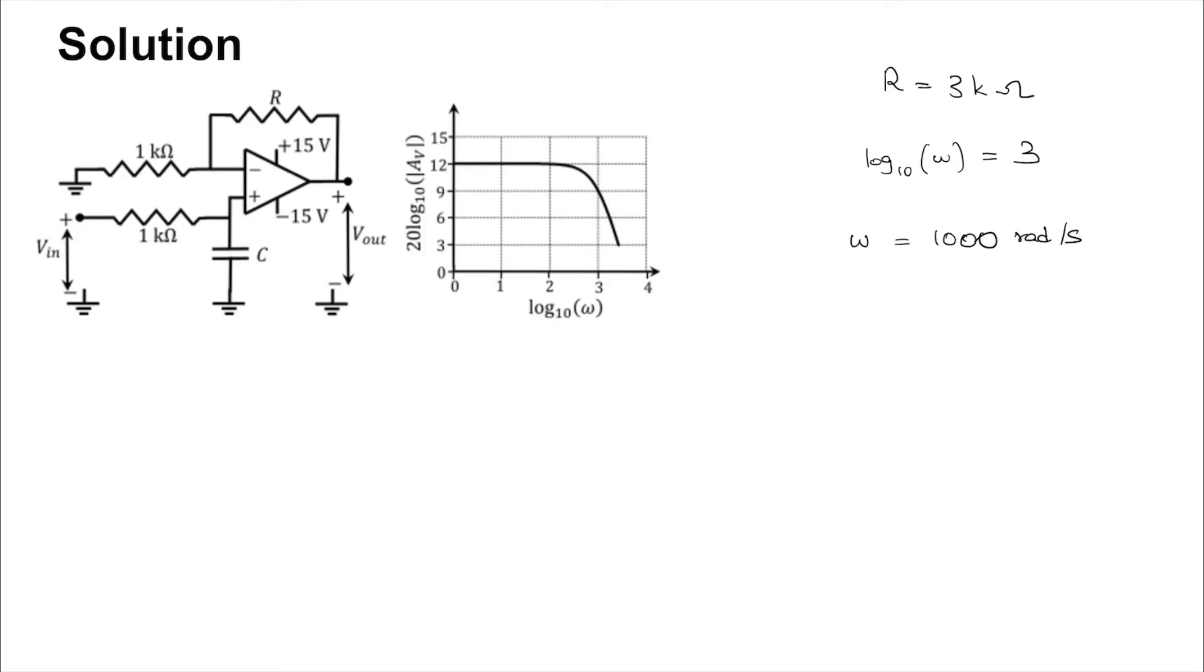And since this is a low pass filter, what we can say is that the cutoff frequency is 1 by the time period, which is 1 kilo ohm resistor into the capacitance. Now, this is equal to 1000, and so C is 1 by 1k times 1000, which is 1 microfarad.